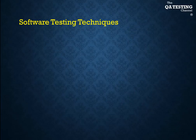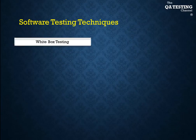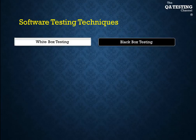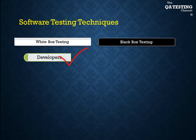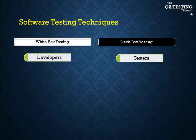There are two software testing techniques: the white box testing techniques and the black box testing techniques. The white box testing is mainly used by the development area, and the black box testing is for the QE testing team.